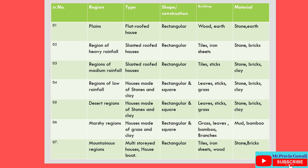Seventh region: Mountainous regions. Type: multi-storied houses and houseboat. Construction: rectangular. Building material for roof: tiles, iron sheets and wood. Material for walls: stone and bricks.